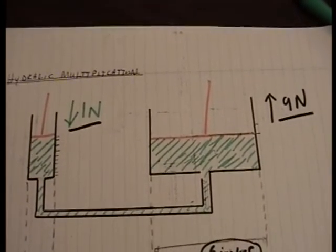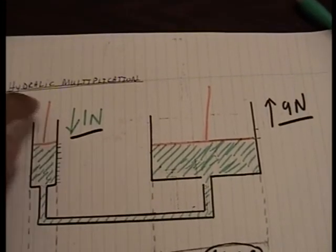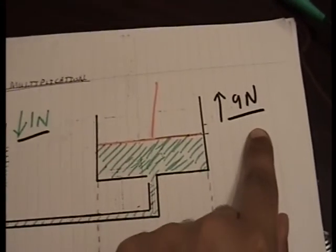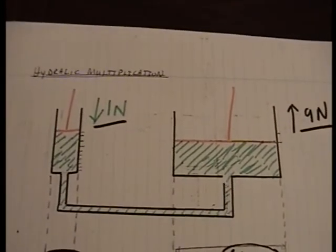In layman's terms, that actually means that if this piston is moved down with a force of 1 newton for 9 inches, this piston will move up with a force of 9 newtons for 1 inch. That is basically hydraulic multiplication.